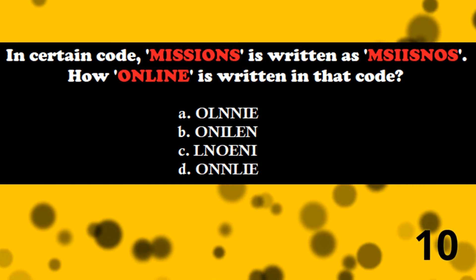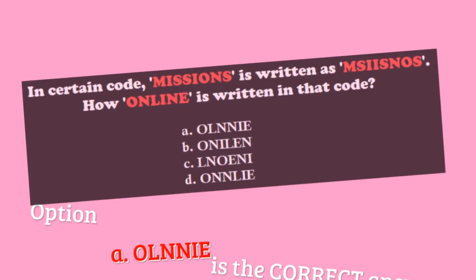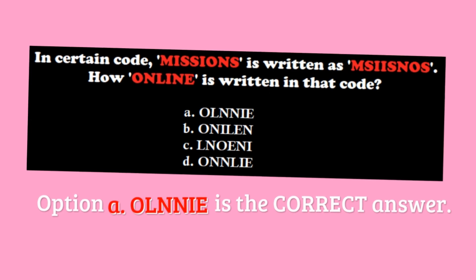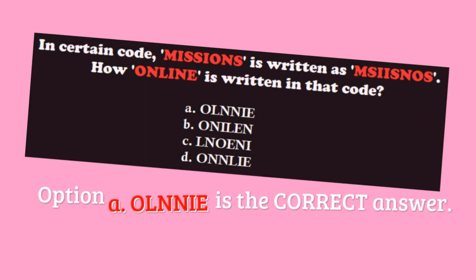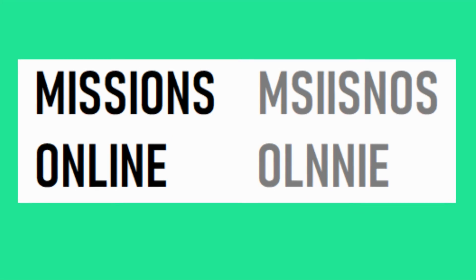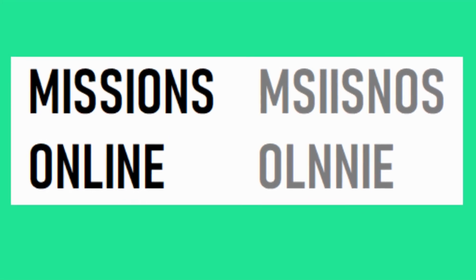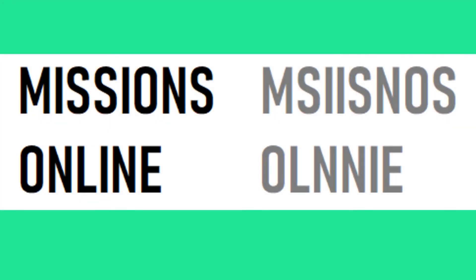Did you guess the answer? Option A, that is O-L-N-N-I-E, is the correct answer. The pattern involved in this code is: the first and last letters remain the same, and the rest of the letters interchange their positions in pairs of two.